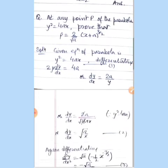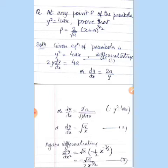Now we take another question: at any point P of the parabola y² = 4ax, prove that the radius of curvature ρ = 2(x+a)^(3/2) / √a. Using the formula ρ = [1 + (dy/dx)²]^(3/2) / (d²y/dx²). Given y² = 4ax, differentiating with respect to x gives 2y·(dy/dx) = 4a, so dy/dx = 2a/y. Substituting y = √(4ax), we get dy/dx = √(a/x).